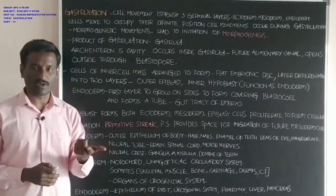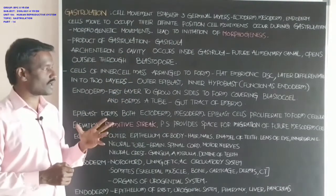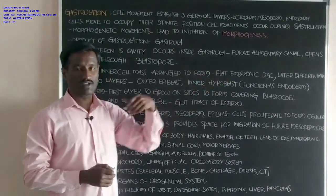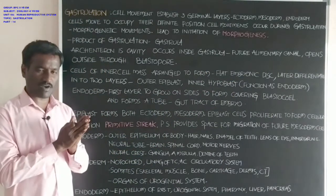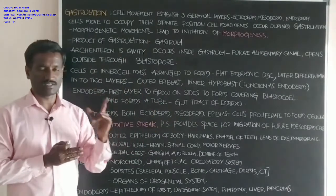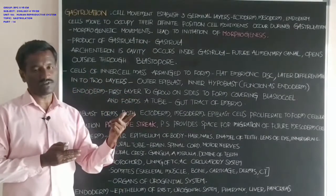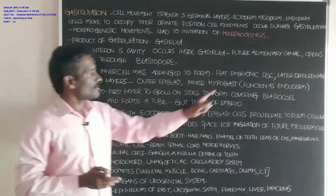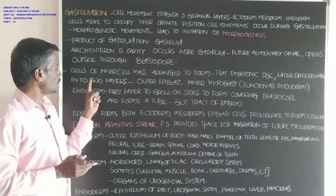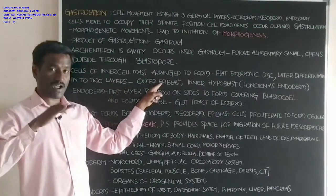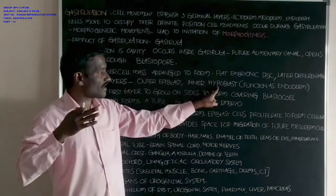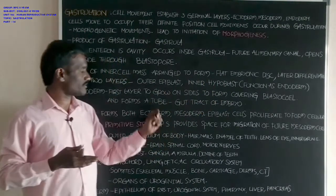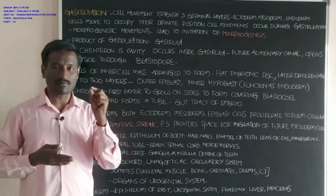Cells of the inner cell mass are engaged to form the flat embryonic disc. The inner cell mass forms the embryonic disc, which consists of two types of layers: the epiblast and the hypoblast. The hypoblast contains cuboidal epithelial cells, while the epiblast consists of columnar epithelial cells.